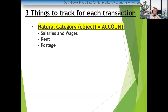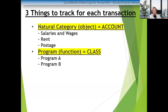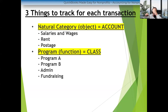Nonprofit businesses have to track two more things — for a total of three. They have to track the natural category, but they also need to track the 'why' of the expense. In other words, what specifically was the reason for spending the money on postage? Was it for a program, or was it for overhead or admin, or was it for fundraising? All nonprofits have to put their expenses into those three buckets: program expense, admin or overhead expense, or fundraising.